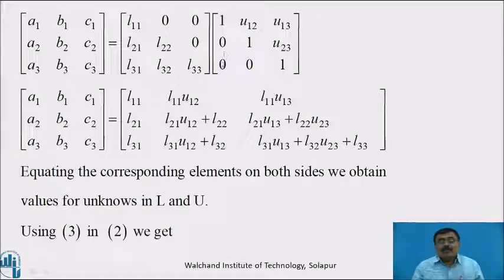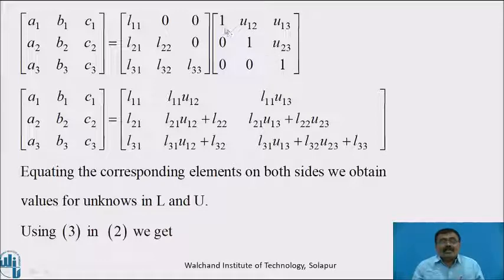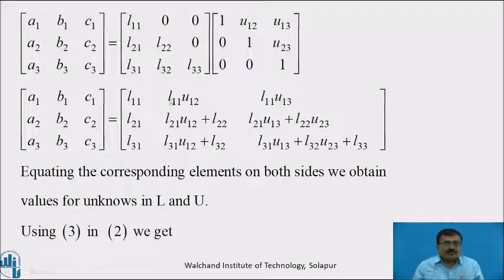In U, all below-diagonal elements are zero and the diagonal elements are unity: U = [[1, U12, U13], [0, 1, U23], [0, 0, 1]].